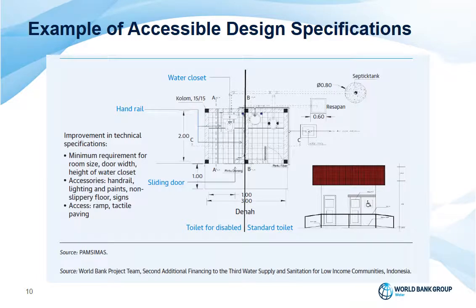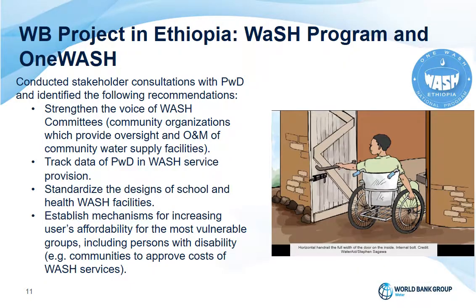Another example is in Ethiopia — the WASH program, which targets both urban and rural WASH. It scaled up disability inclusion by addressing specific needs of persons with disabilities. Actions included conducting stakeholder consultations that included persons with disabilities and developing and adopting standard design guidelines for sanitation facilities in schools and health facilities. As it enters its second phase, it intends to establish mechanisms for increasing affordability of WASH for the most vulnerable, including persons with disability.